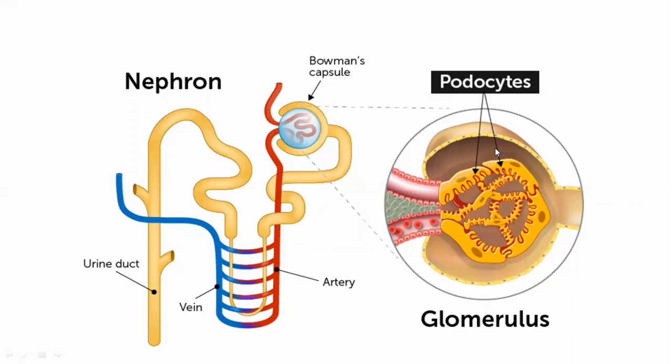Podocytes have foot-like cytoplasmic extensions that prevent the passage of large substances, while plasma, other soluble molecules, and water pass through easily. In the nephron, there is no exchange of gases and no passage of large molecules — only small solutes, electrolytes, water, and plasma pass through to maintain normal homeostasis. Excess amounts are eliminated from the body through excretion.